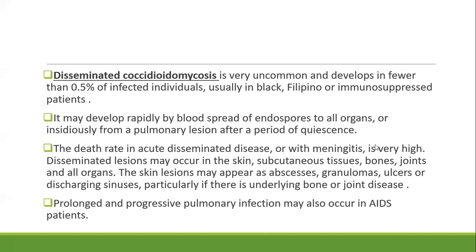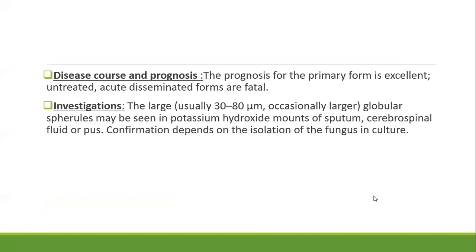The prognosis of the primary form is excellent, but untreated acute disseminated forms are fatal. Investigations usually reveal large, 30 to 80 micrometer, globular spherules seen in KOH mounts of sputum, CSF, or pus. Confirmation depends on isolation of the fungus in culture.